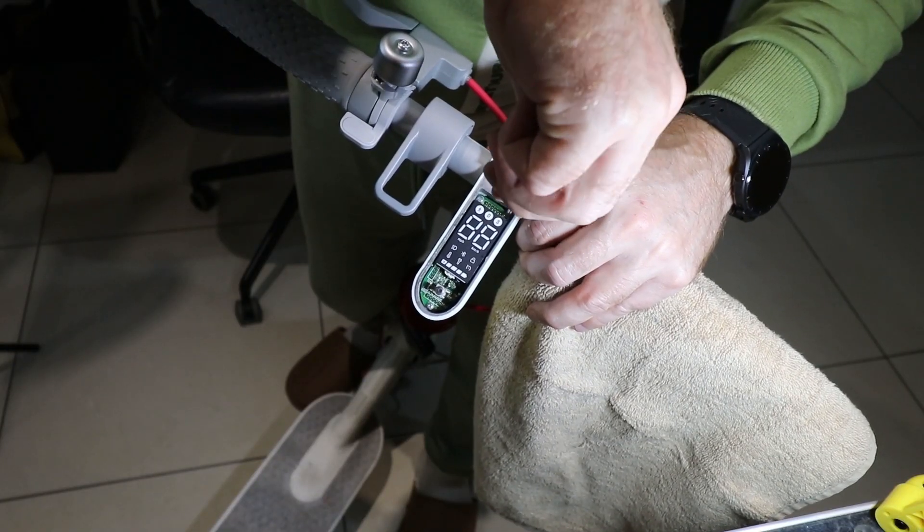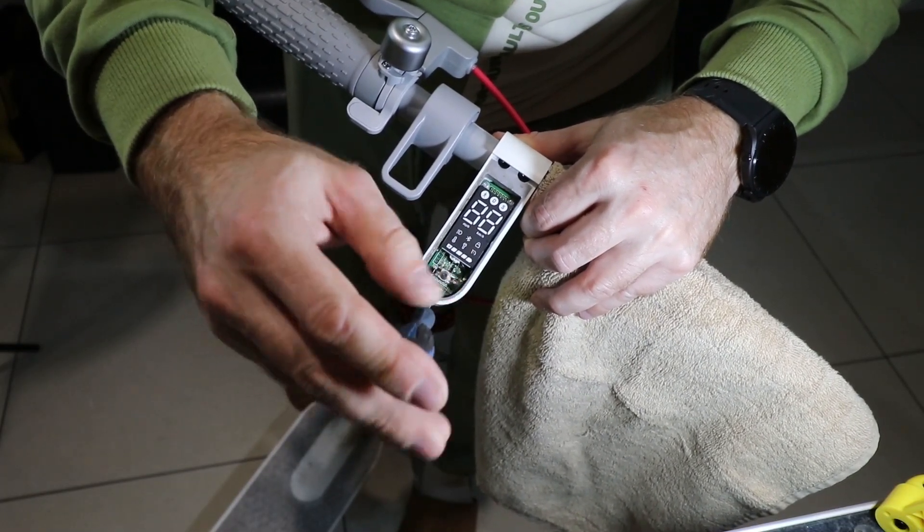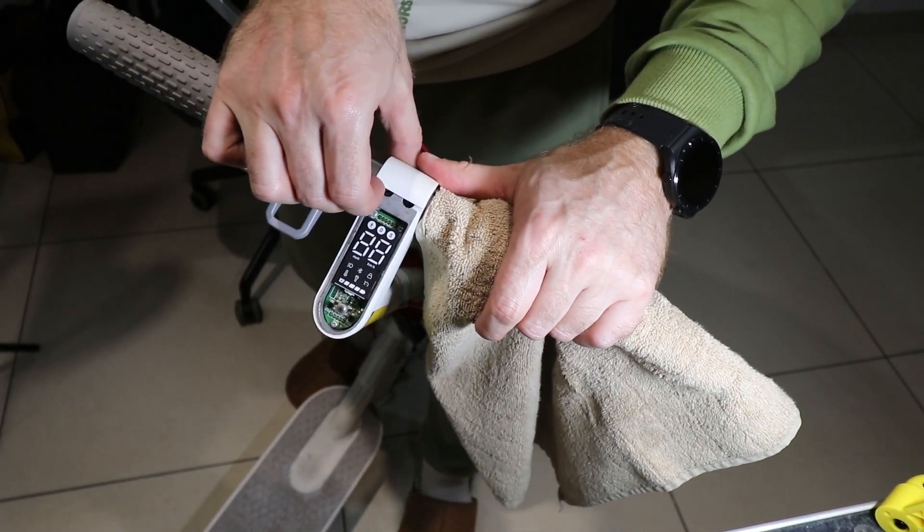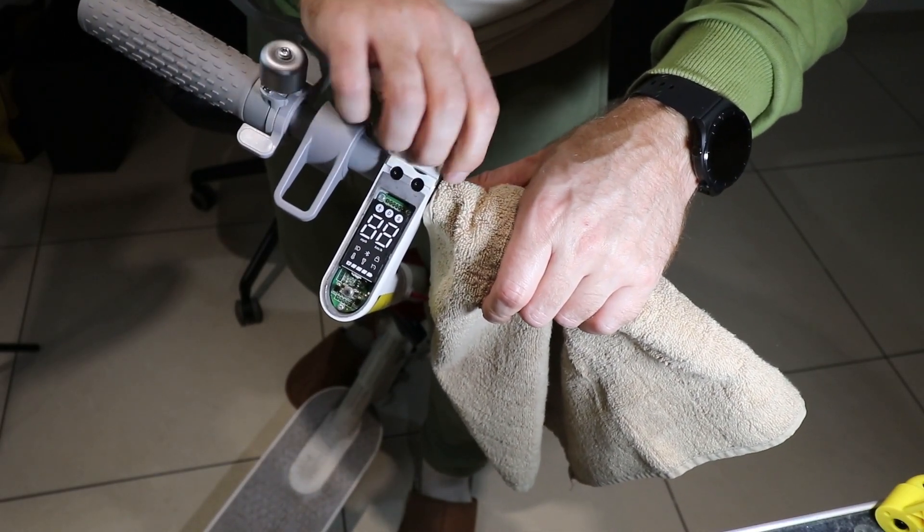Unscrew three bolts to remove the dashboard. And the front plastic cover is also glued. Try to pull it without breaking it.